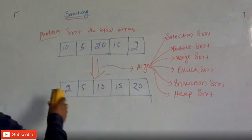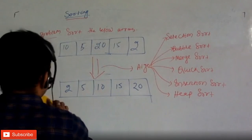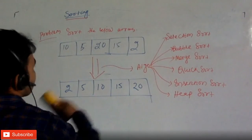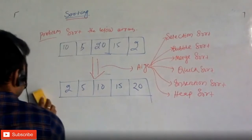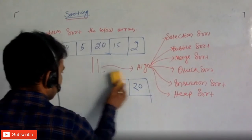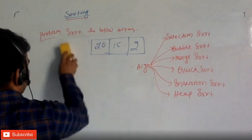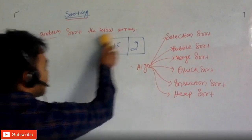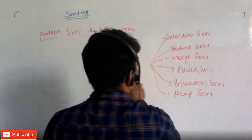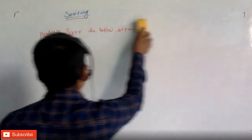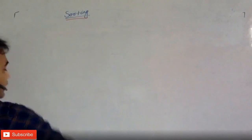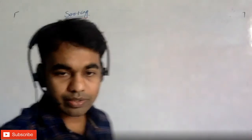Now let's start with the first sorting algorithm — selection sort. I'll erase this and we'll start with selection sort. Let's make a heading: Selection Sort.